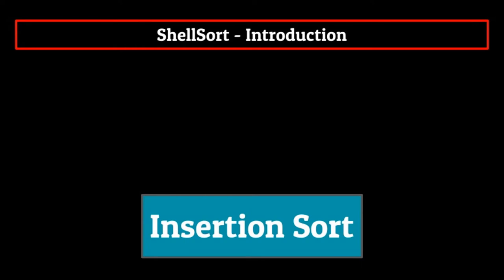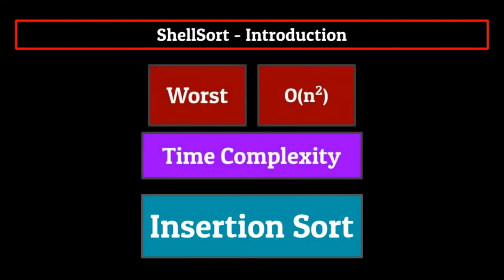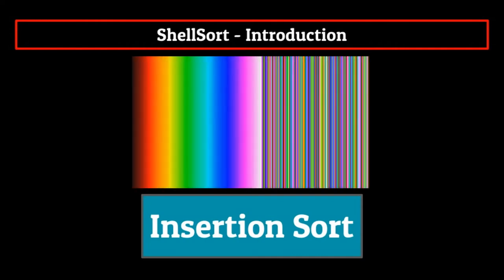Now before we hop into a definition, let's take a look at what the major downfall of insertion sort was. If you remember, the algorithm was extremely inefficient when it came to sorting large data sets, having an O(n²) average and worst case scenario time complexity. The reason for this was that when we were placing an element at its correct place in the list, we only moved it one position at a time. This means that if we have a small element that's on the far right of the list and it needs to be placed towards the beginning, we would need to shift a ton of elements to place it at its correct location.